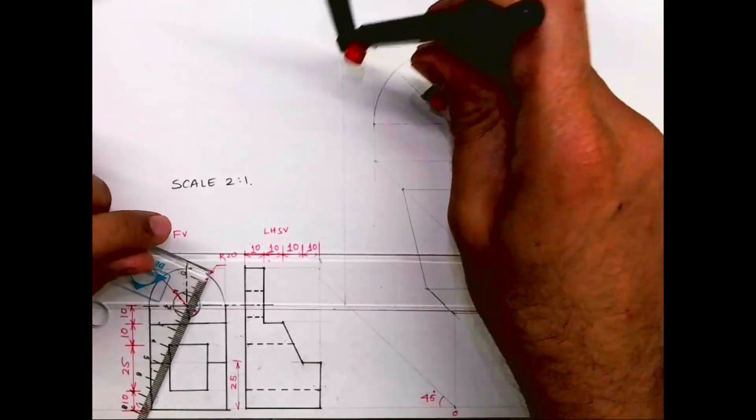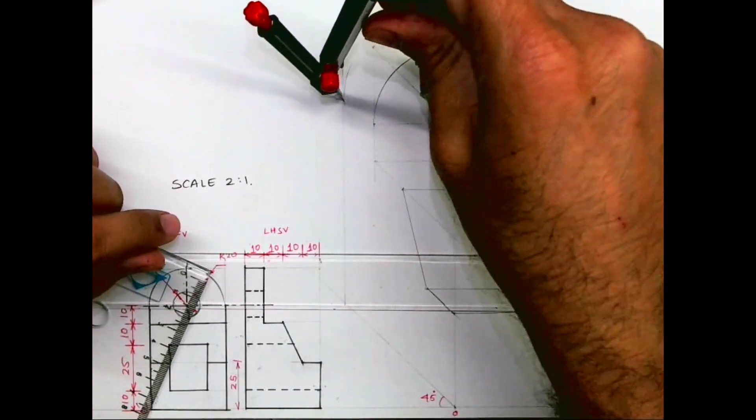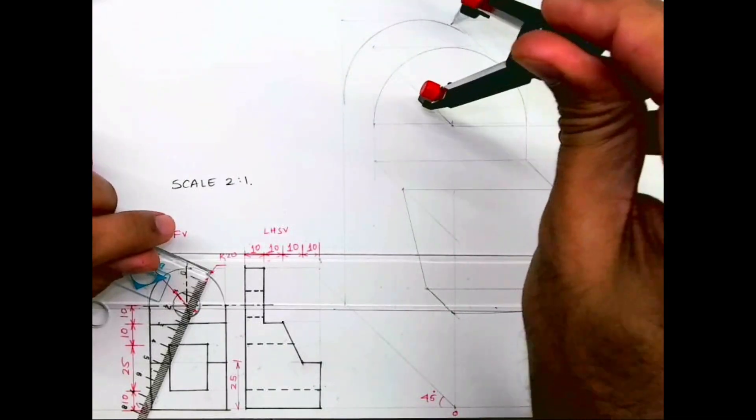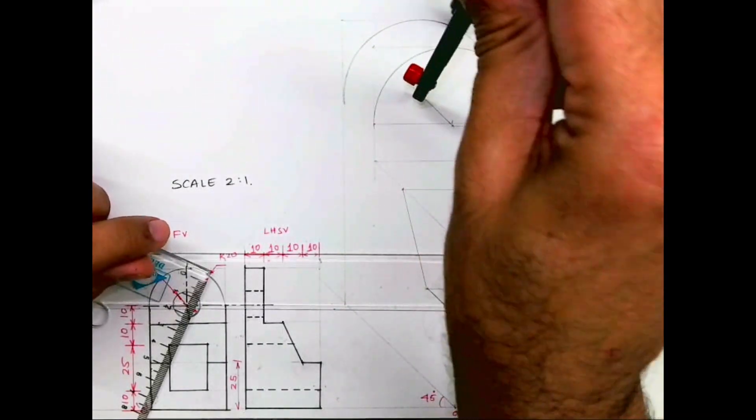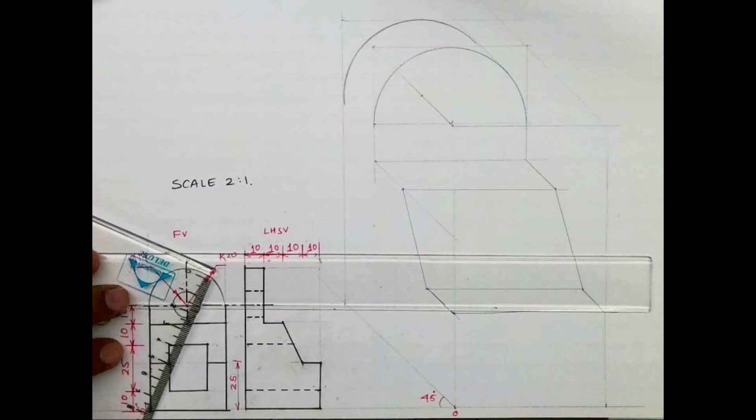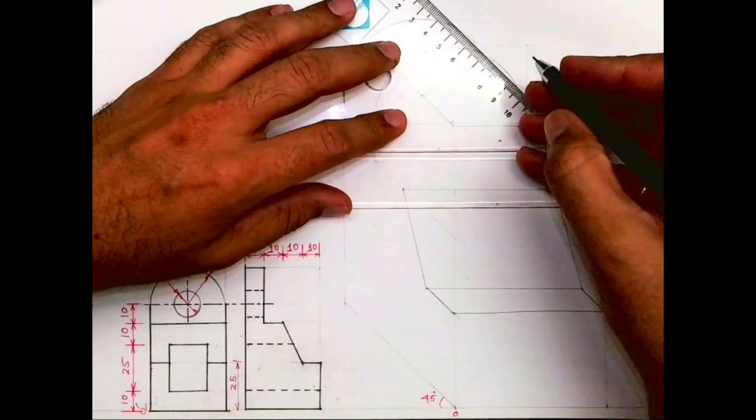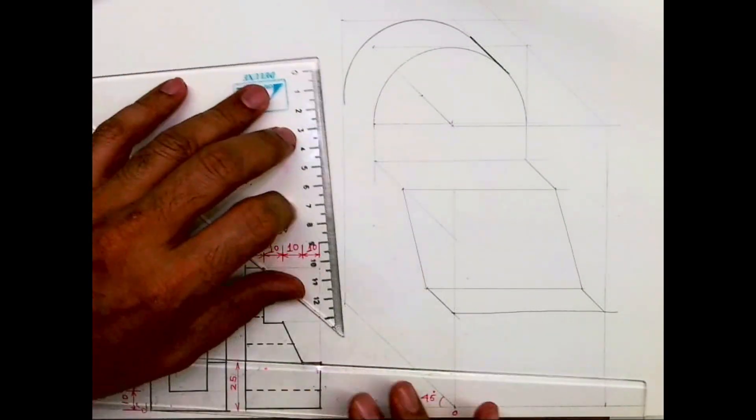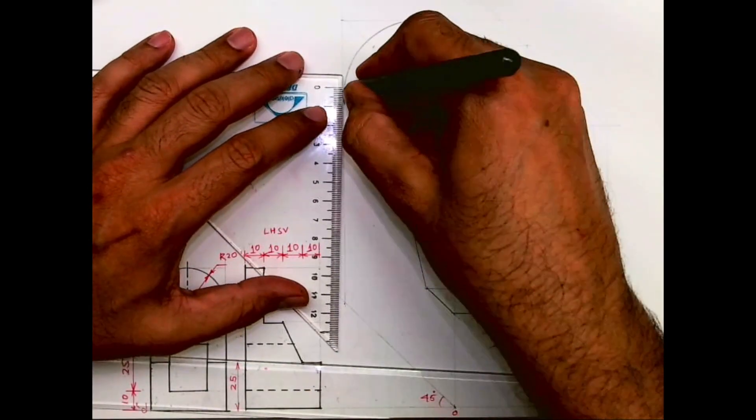Remember, I am multiplying all dimensions by 2 while drawing it, but we don't have to multiply angle. If there is some slope of 30 degrees, we don't have to multiply that by 2. So we are done with this part.